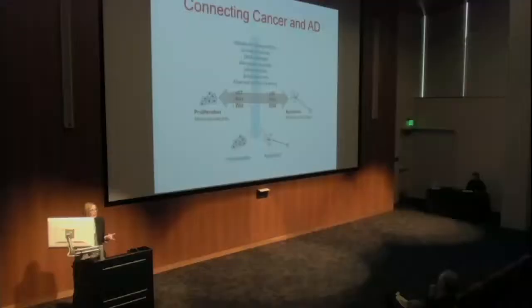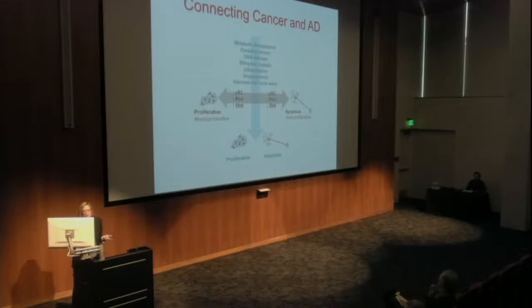The first axis is the vertical one: similar pathophysiological drivers have different effects on different tissues. In dividing cells you get proliferation; in neurons you get cell death. Then there's the horizontal axis where the same genes or pathways are used very differently in the two cell types, and their dysregulation creates cancer in one direction and neurodegeneration in the other. It's a very interesting and complex story.